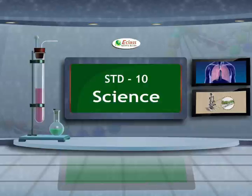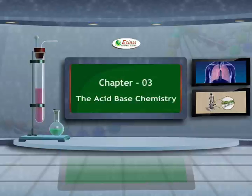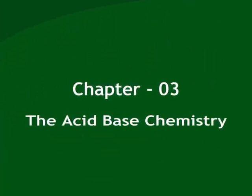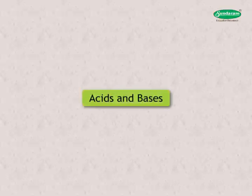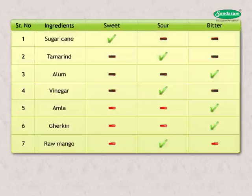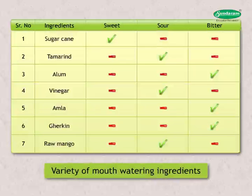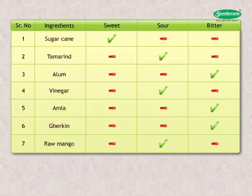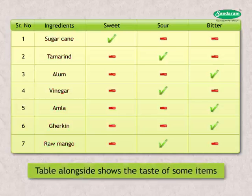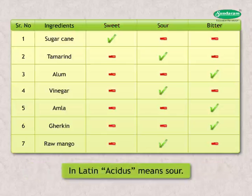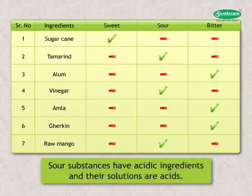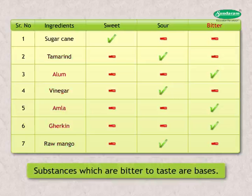Standard 10 Science, Chapter 3: The Acid-Base Chemistry. Dear students, you must have enjoyed a variety of mouth-watering ingredients to relish your taste buds since your childhood. Recall the taste of some more ingredients given in the table alongside, which shows the taste of some items found in your kitchen. In Latin, 'acidus' means sour. Substances which are sour to taste have acidic ingredients and their solutions are acids. Substances which are bitter to taste are bases.